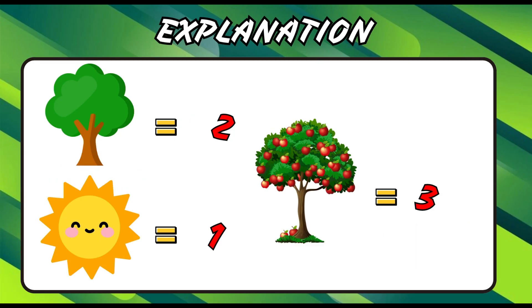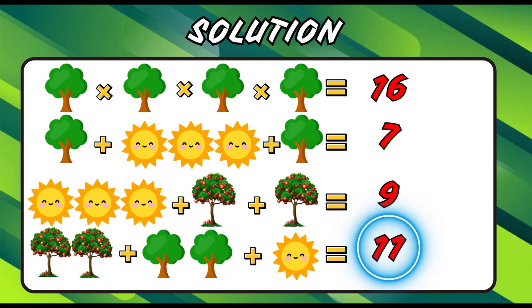Wow, great guess. The sun takes up the value of 1, 2 for the tree, and 3 for the apple tree. So the equation becomes 6 plus 4 plus 1. If you guess the answer as 11, then that's right. Congrats.